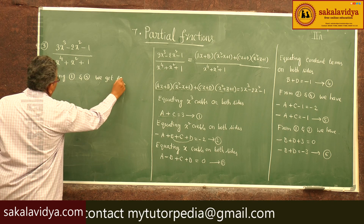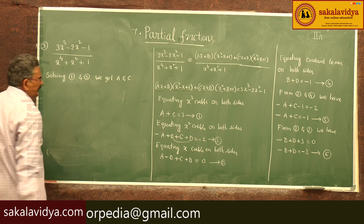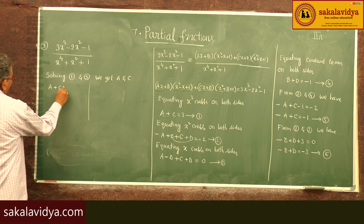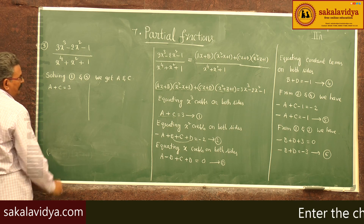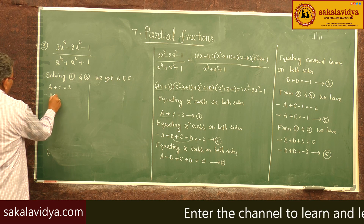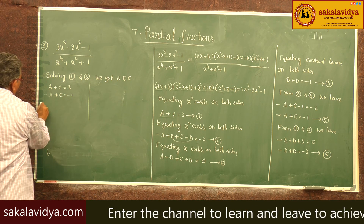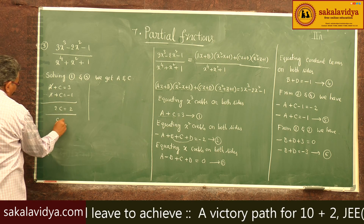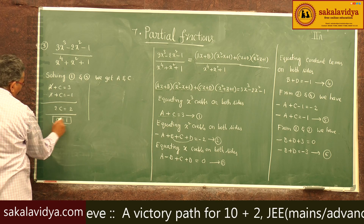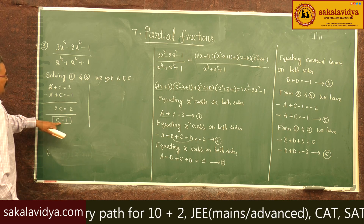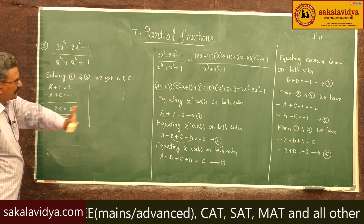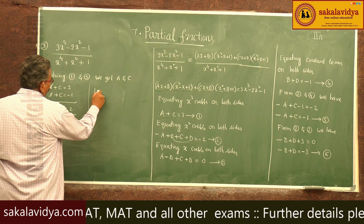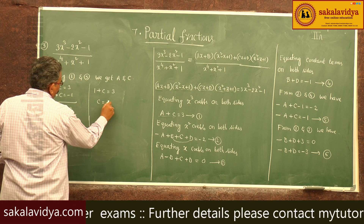Solving equations 1 and 5: a + c = 3 and -a + c = -1. Adding these two: 2c = 2, so c = 1. Substituting c = 1 into equation 1: a + 1 = 3, so a = 2.